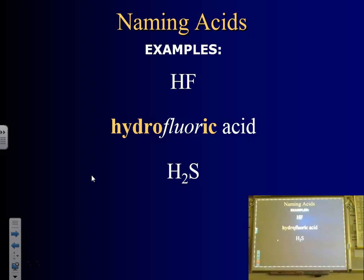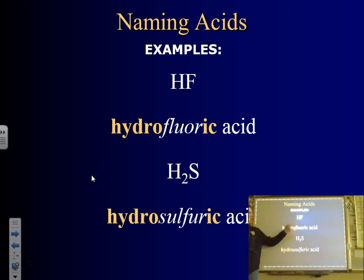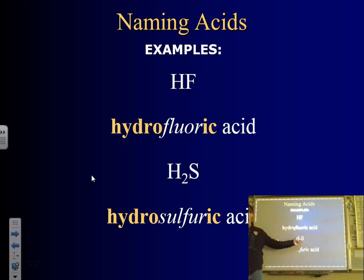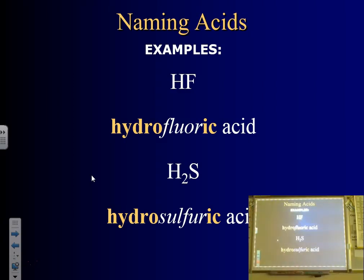H2S: you'd call it hydrosulfic — actually it's hydrosulfide, but hydrosulfic works since you're applying the last-syllable rule. Why are there two hydrogens here but only one in HCl? The charge on sulfur is negative two, and hydrogen is plus one, so we balance charges. Fluorine is minus one, so we only need one hydrogen.